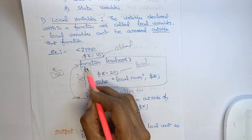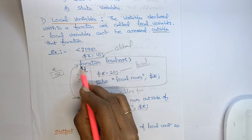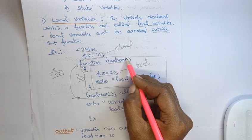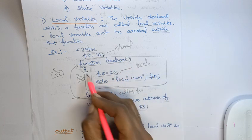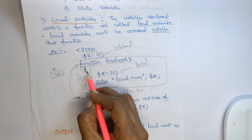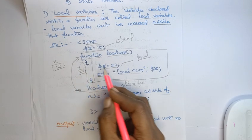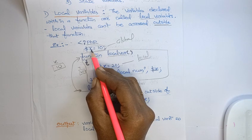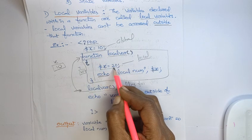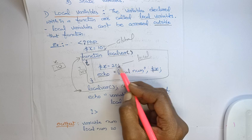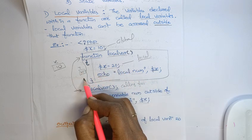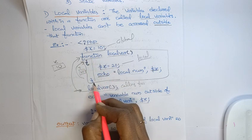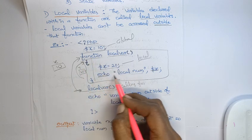Now I am defining a function. To define a function in PHP, use the keyword 'function' followed by a space and the function name, then open and close braces. The function body always starts with a curly brace. Within the function, I am declaring the same variable x again with value 20. So this x equals 20 is local to within this function.